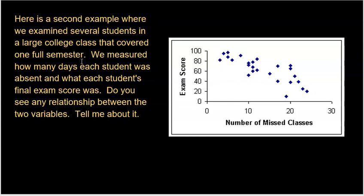All right, here's another one where we examined several students in a large college class that covered one full semester. We measured how many days each student was absent and what each student's final exam score was. Do you see any kind of relationship? So again, what's the explanatory? Number of classes missed. So the X value for each point is how many classes did you miss that semester? And the Y value, the response variable, was your final exam score.